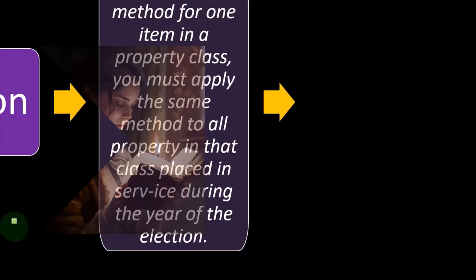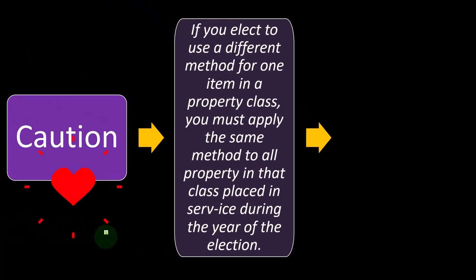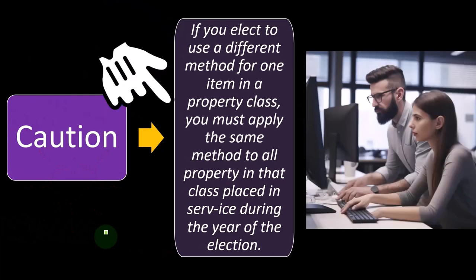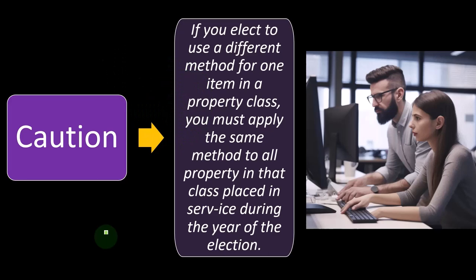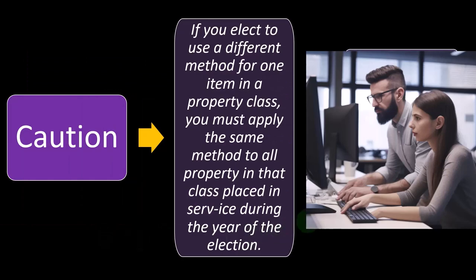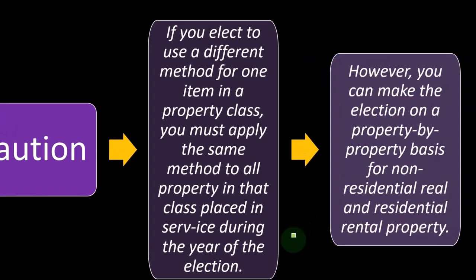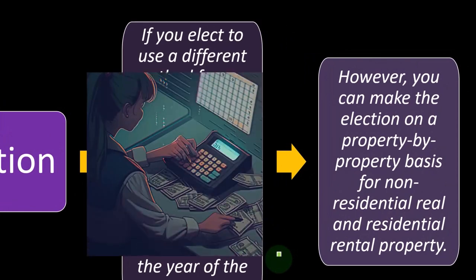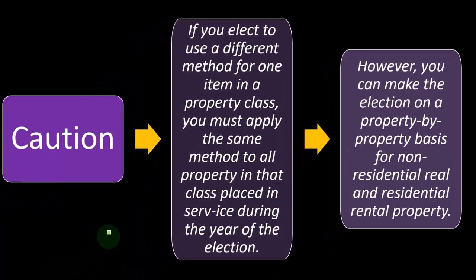If you elect to use a different method for one item in a property class, you must apply the same method to all property in that class placed in service during the year of the election — they want some form of consistency. However, you can make the election on a property-by-property basis for non-residential real and residential rental property, likely because of the large and expensive nature of those properties.